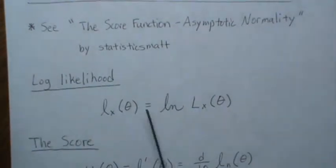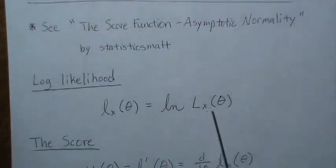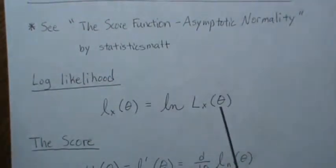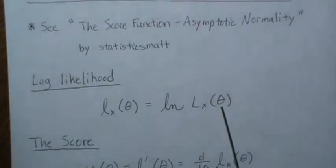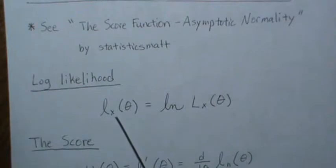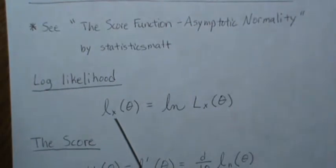We're going to let the log likelihood be L of X, which is the log of the likelihood. The likelihood is typically given the sample data. If we were to resample data of the same size n, we'd get a different number, so we can think of this as a random variable in X. That's how we think of the sampling distribution of the log likelihood, and we put n in there to denote the sample size.